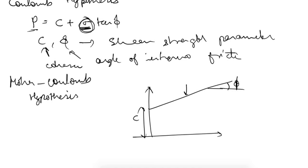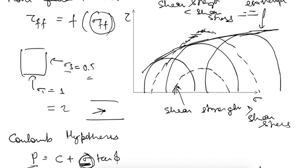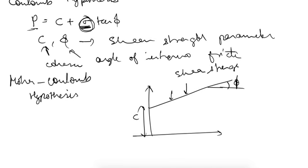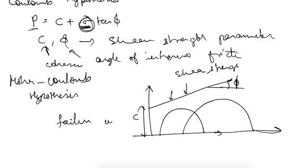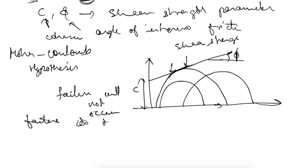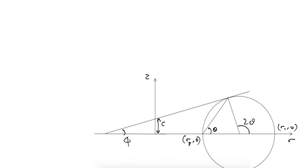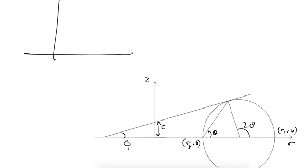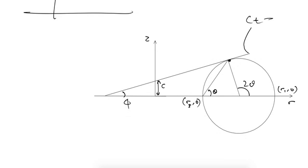This straight line shows the shear strength, similar to the Mohr envelope but taken as a straight line rather than a curve. Any Mohr circle lying below this line will not cause failure. But if a circle just touches this shear strength envelope, failure is imminent — it is just about to happen. From that point of tangency, we can determine the failure plane.